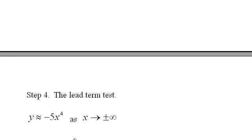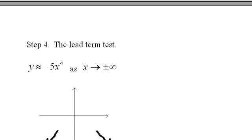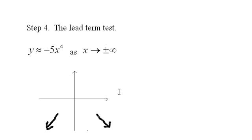And then the next thing we want to do is the lead term test. We say that the highest power dominates, and this thing negative 5x to the fourth is the highest power. So as x gets really big in the positive or negative direction, this function is going to behave like negative 5x to the fourth. And we know that power functions like this to an even power all behave like x squared.